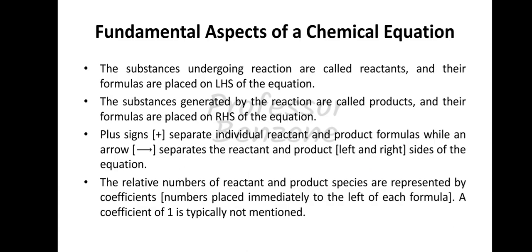The substances undergoing reactions are called reactants. They are placed on the left side of the equation. Substances generated by the reaction are called products, placed on the right side of the equation. A plus sign separates the individual reactants and products, while an arrow separates the reactants and products on the left and right side of the reaction.